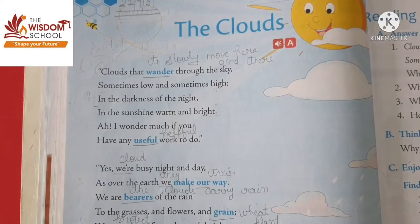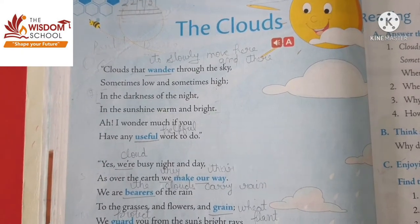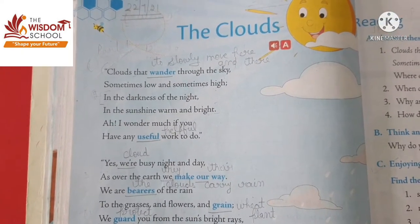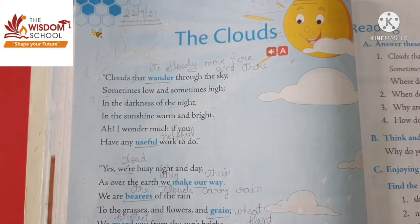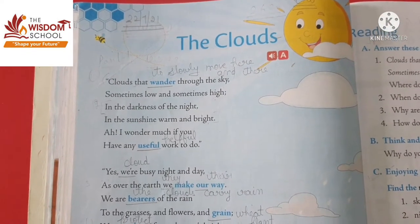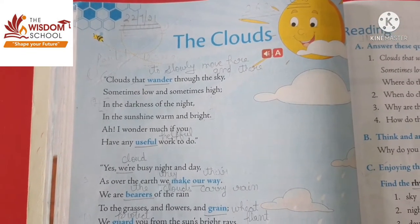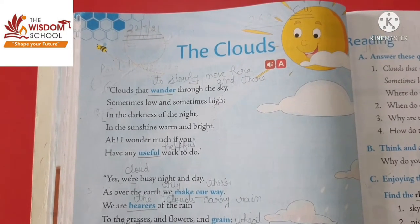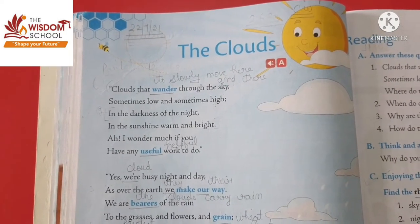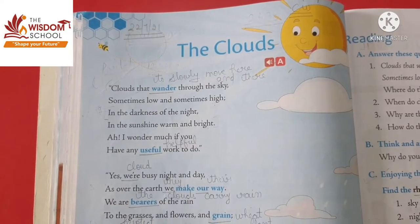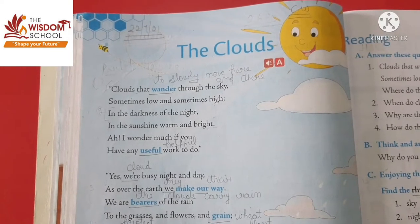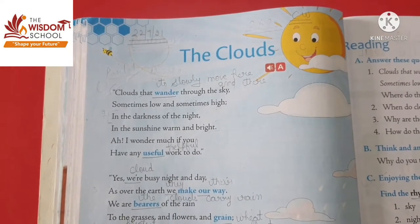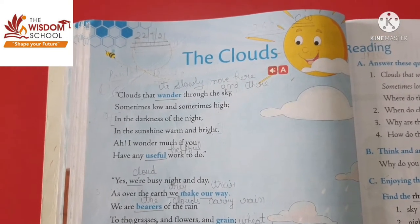Clouds that wander through the sky, sometimes low and sometimes high. Wander means to slowly move here and there. Clouds sky में क्या करते हैं? Slowly move करते हैं, here and there. Sometimes low and sometimes high. कभी ये low हो जाते हैं और कभी high.